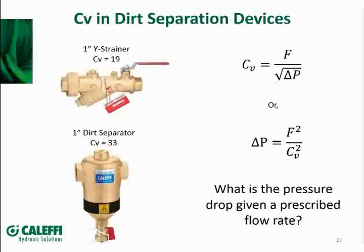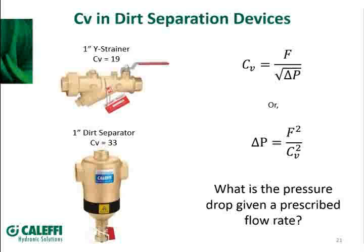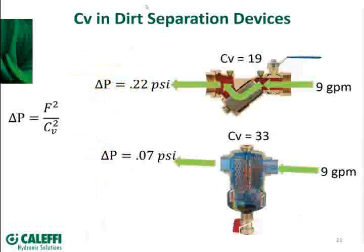We had a couple of questions coming in about glycol-based systems or water temperature other than 60 degrees Fahrenheit. The equations shown here assume basically straight water at approximately 60 degrees. If you have glycol or water at a significantly different temperature than 60 degrees, the more complicated formula is used that takes density into consideration. The density of glycol-based systems is different than water, and the density of water at 150 degrees Fahrenheit is different than at 60 degrees. We do have a slide later that clarifies using a different type of fluid other than water.